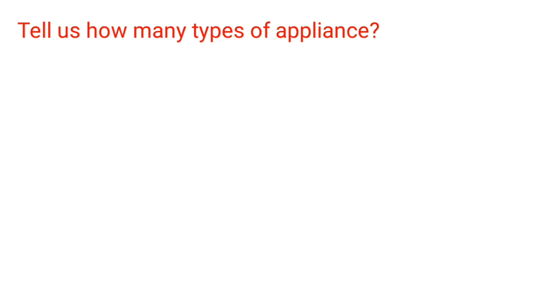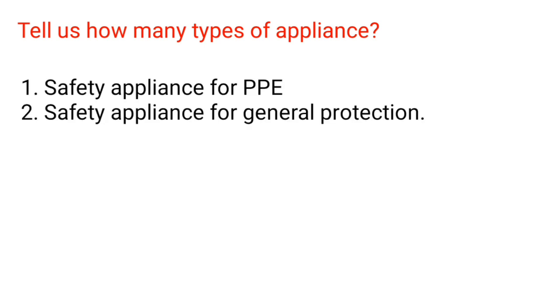How many types of appliances are there? 1. Safety appliances for PPE. 2. Safety appliances for general protection. What is inspection? Inspection means to find out hazards according to a checklist prepared with reference to the department operations by people who are familiar with the plant.